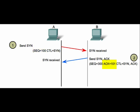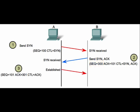This acknowledgement value enables the source client to tie the response back to the original segment that it sent to the destination. At the same time, the destination sends its own synchronization sequence value. Finally, the initiating client responds with an acknowledgement value that is equal to the sequence value it received plus one.